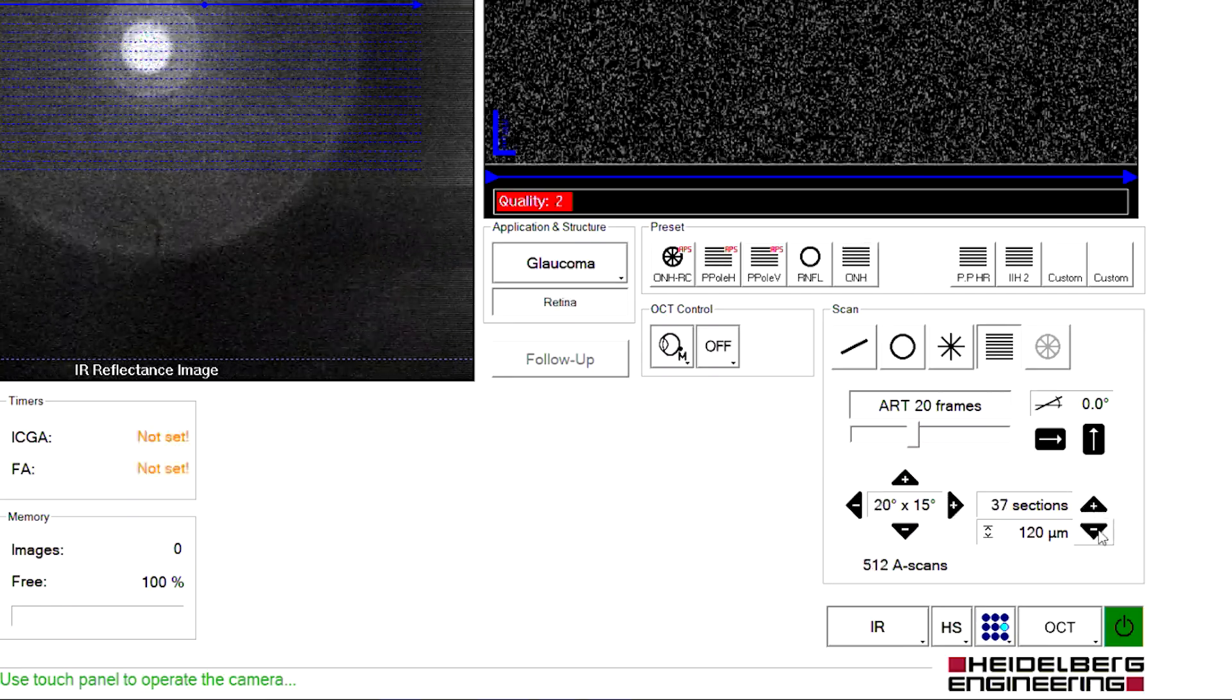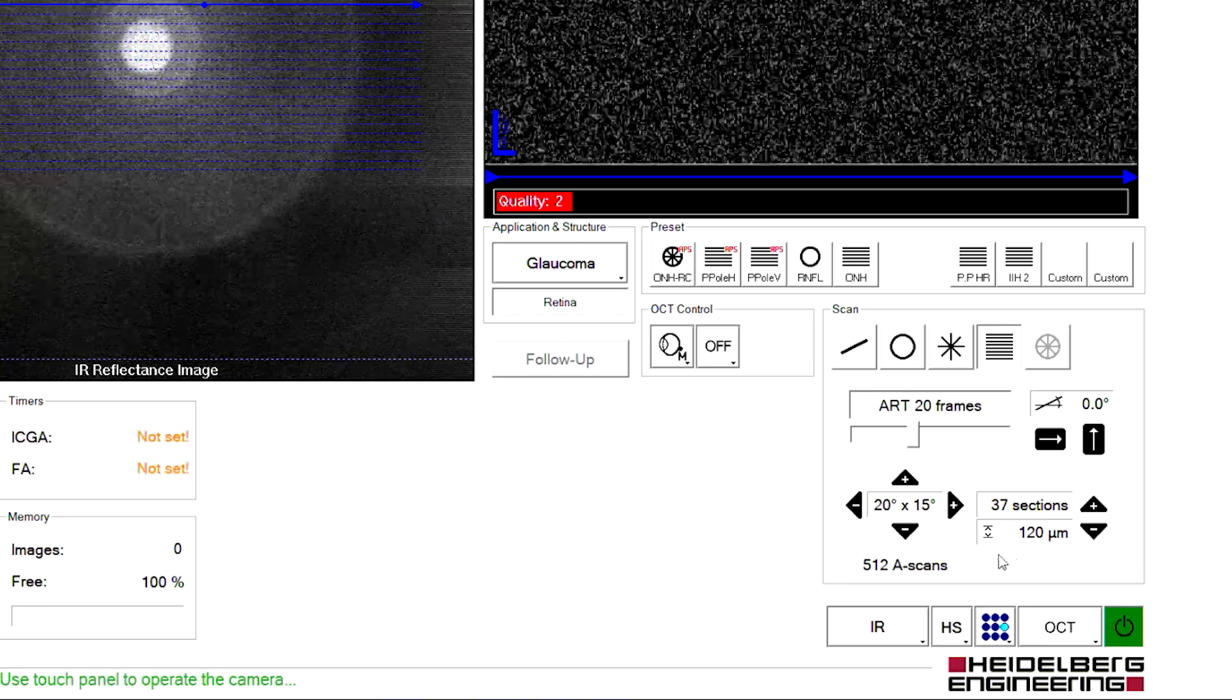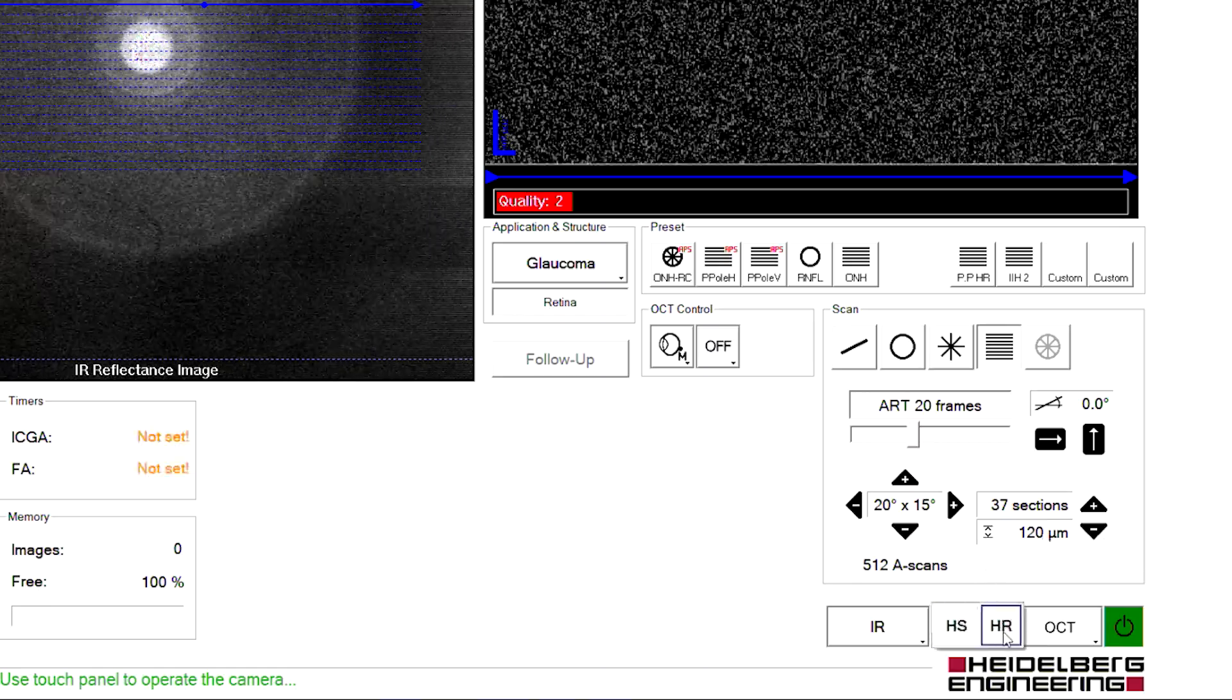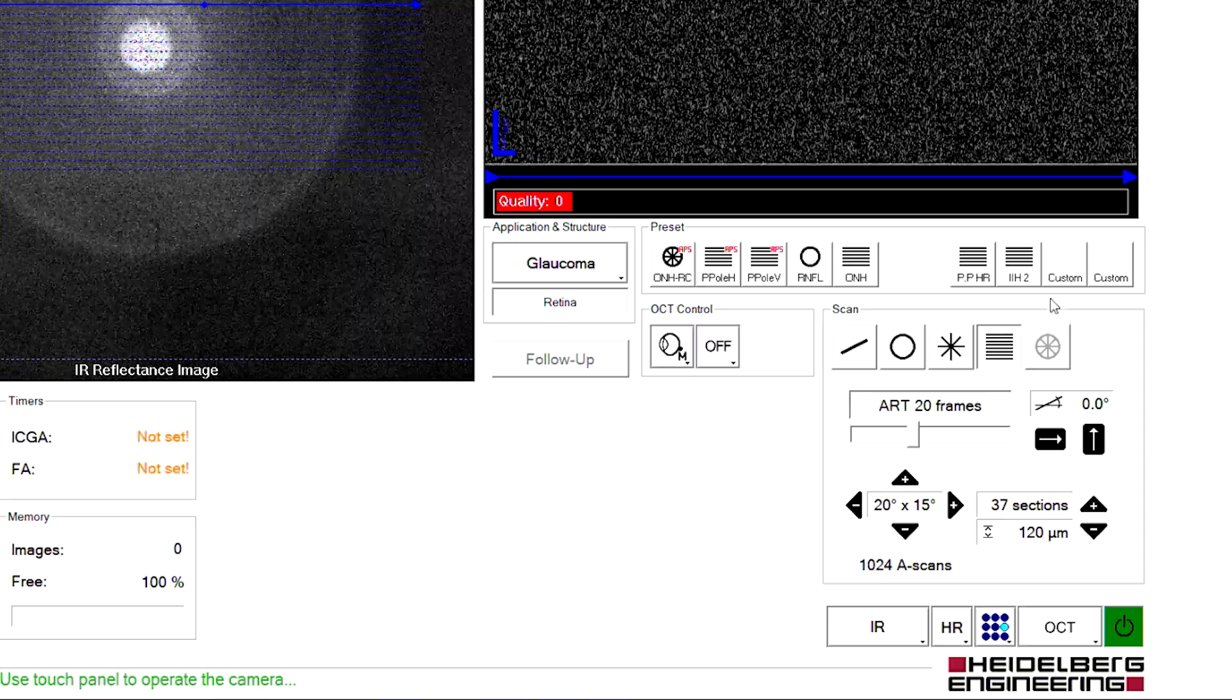To do this, before image capture, set your desired scan parameters as usual, then left-click and hold one of the custom scan buttons.